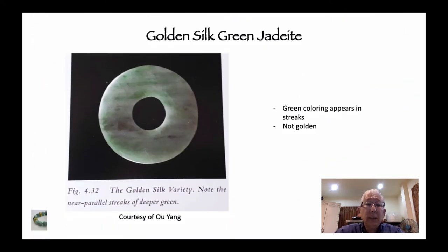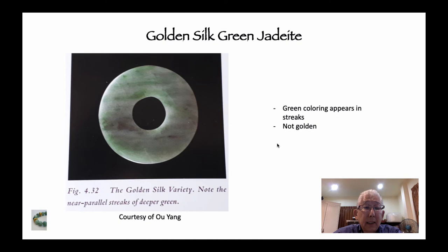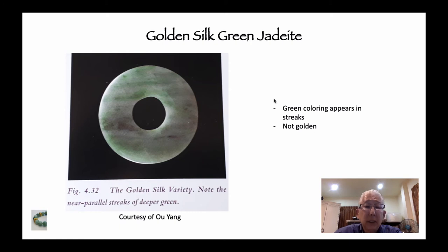This one's interesting — I've never seen it in person. There are parallel streaks of green jadeite decorating white jadeite. It's called golden silk, where the silk refers to the threads of green.